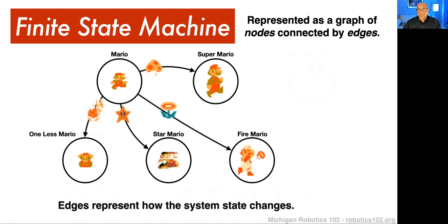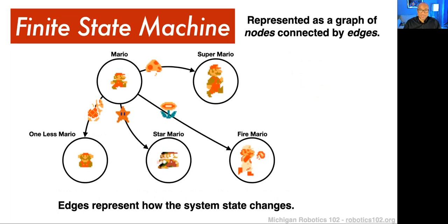Edges represent how the system state changes. For instance, if we took regular Mario and he comes in contact with the mushroom, he becomes Super Mario. If he touches the flower, he goes from regular Mario to Fire Mario. If he touches the star, he becomes Star Mario. And if he touches an enemy the wrong way, then he'll be 'one less Mario.' That really talks about how our system changes — edges describe those changes.